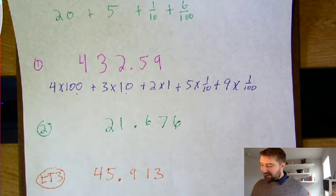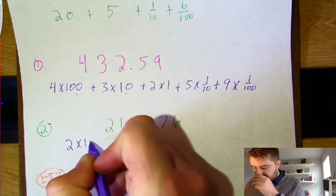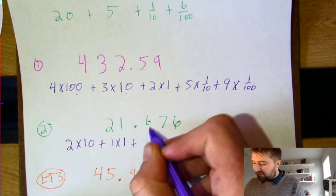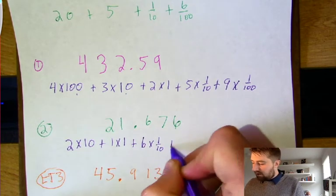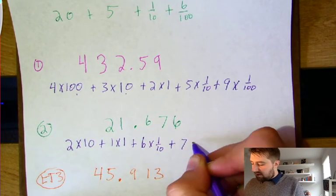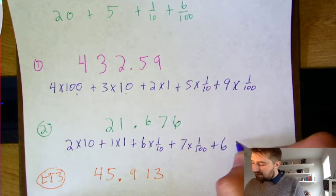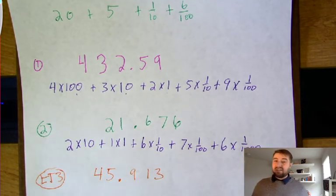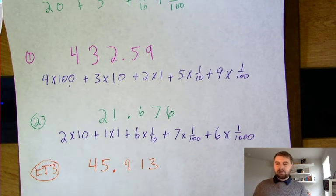Number two: two times ten, plus one times one, plus six times one-tenth, plus seven times one-hundredth, plus six times one one-thousandth—because two is in tens, one is in ones, the first six is in tenths, seven is in hundredths, and the second six is in thousandths. Exit ticket three is all on your own—put it in your exit ticket.